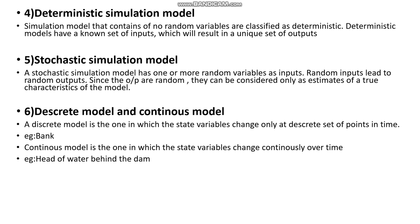In the discrete model, there are very few set of points in the time scale where the variables inside the system will change. Whereas in continuous models, there are a lot of points in the time scale where the entire model's state variables will be changing.